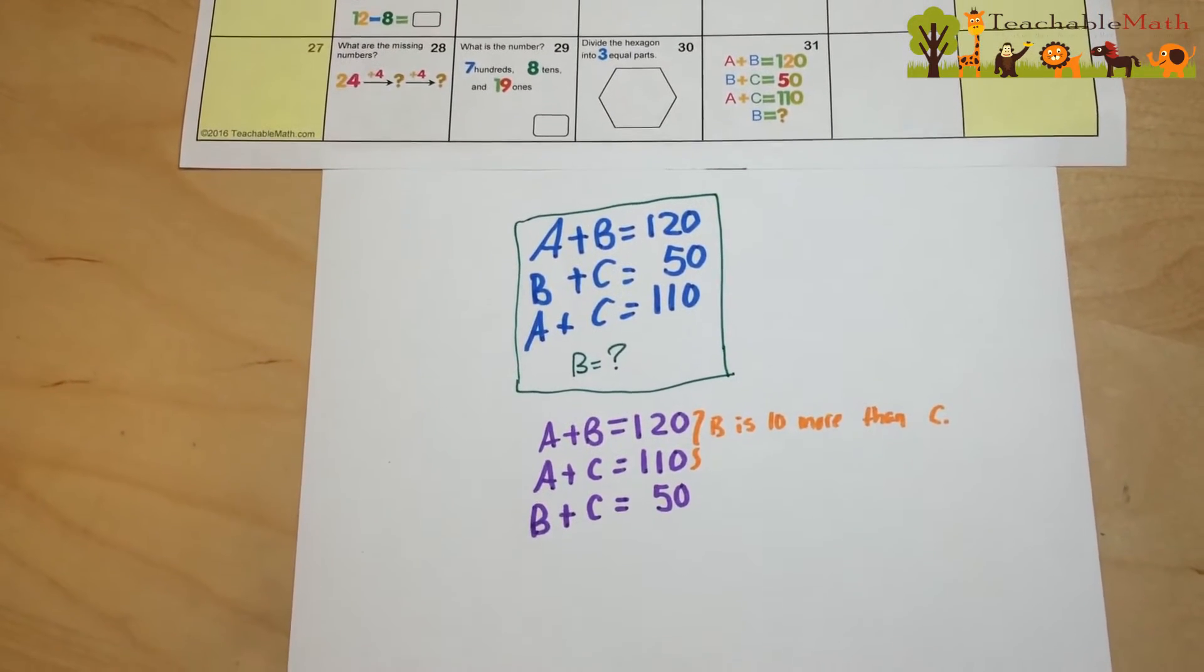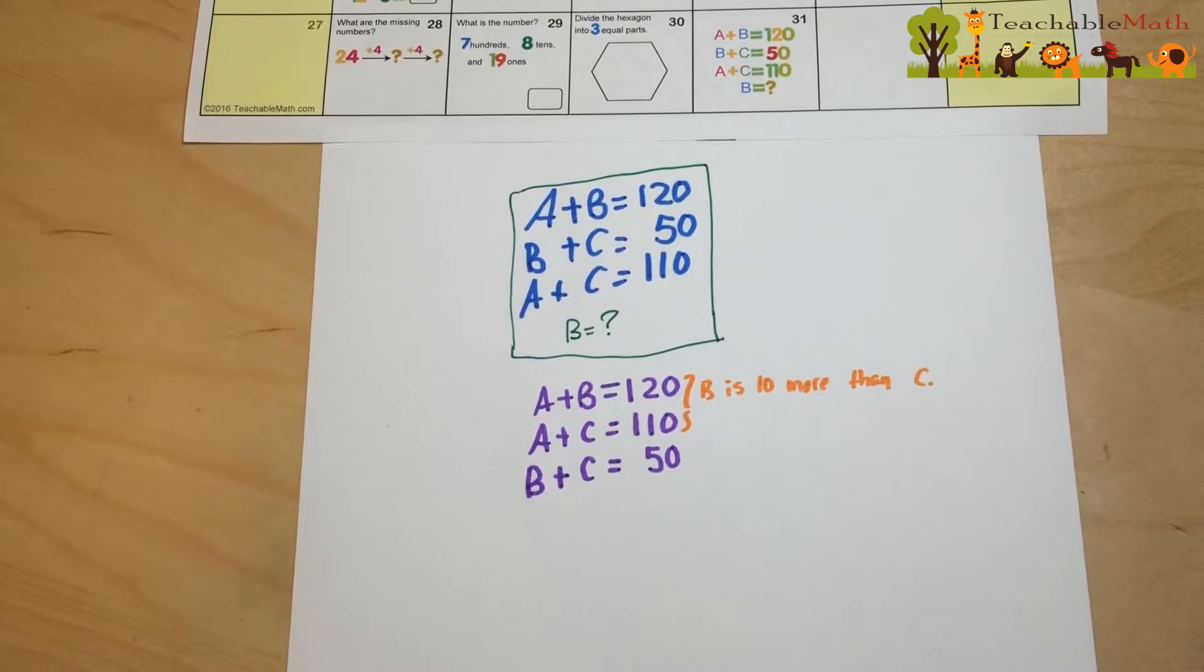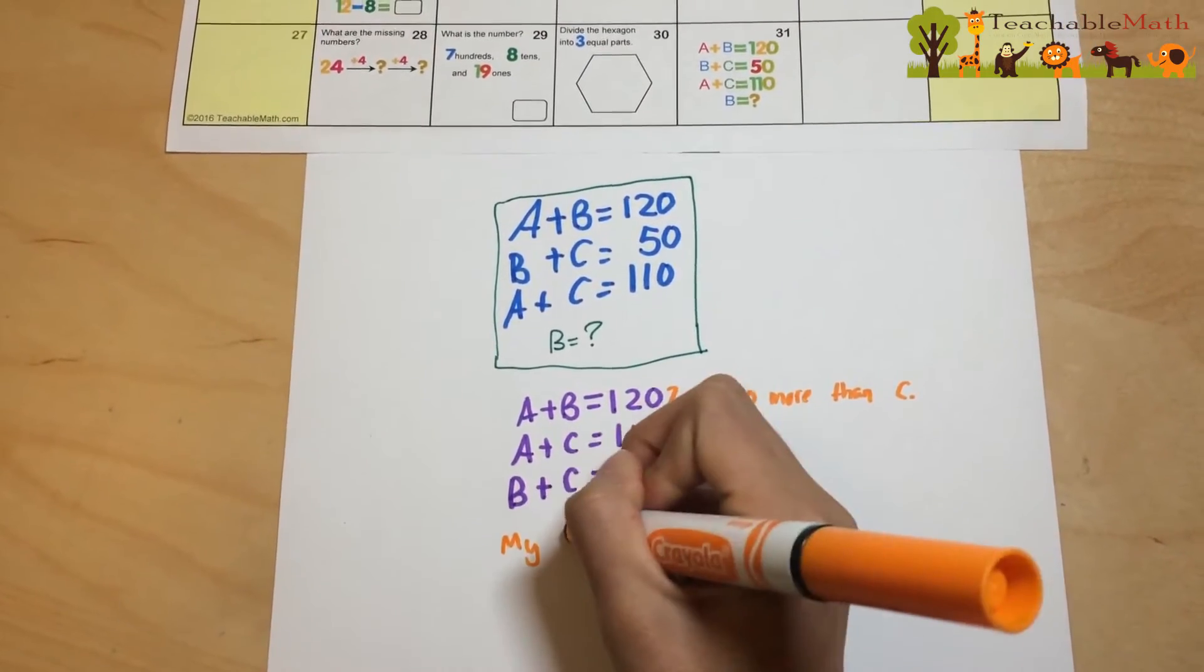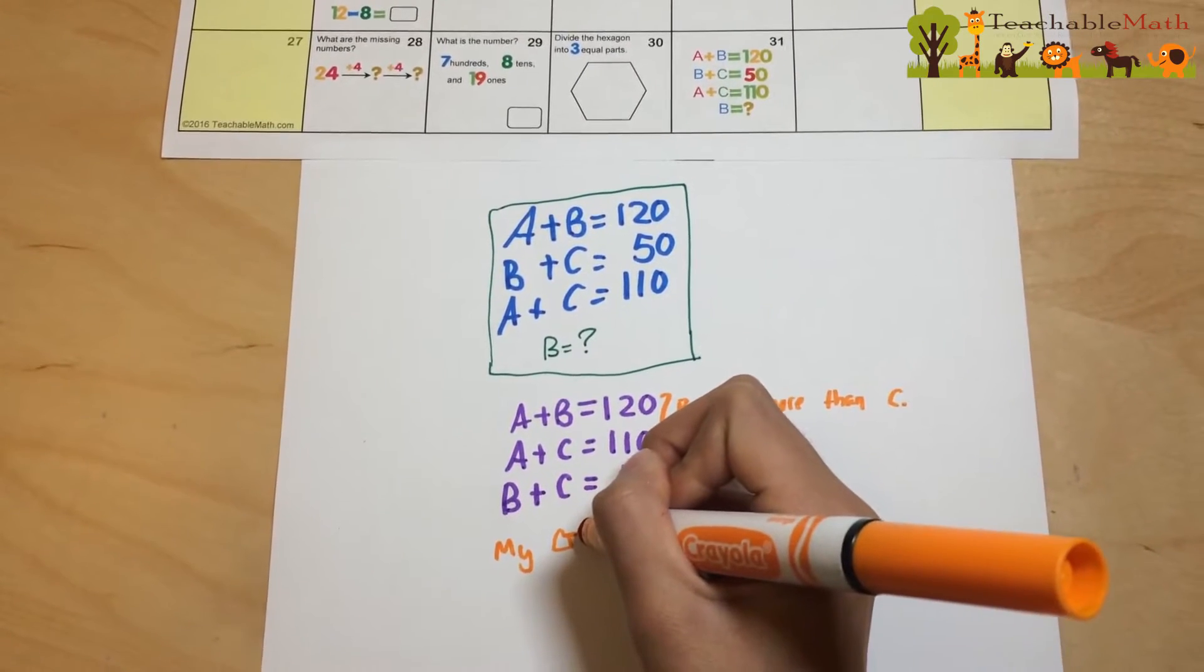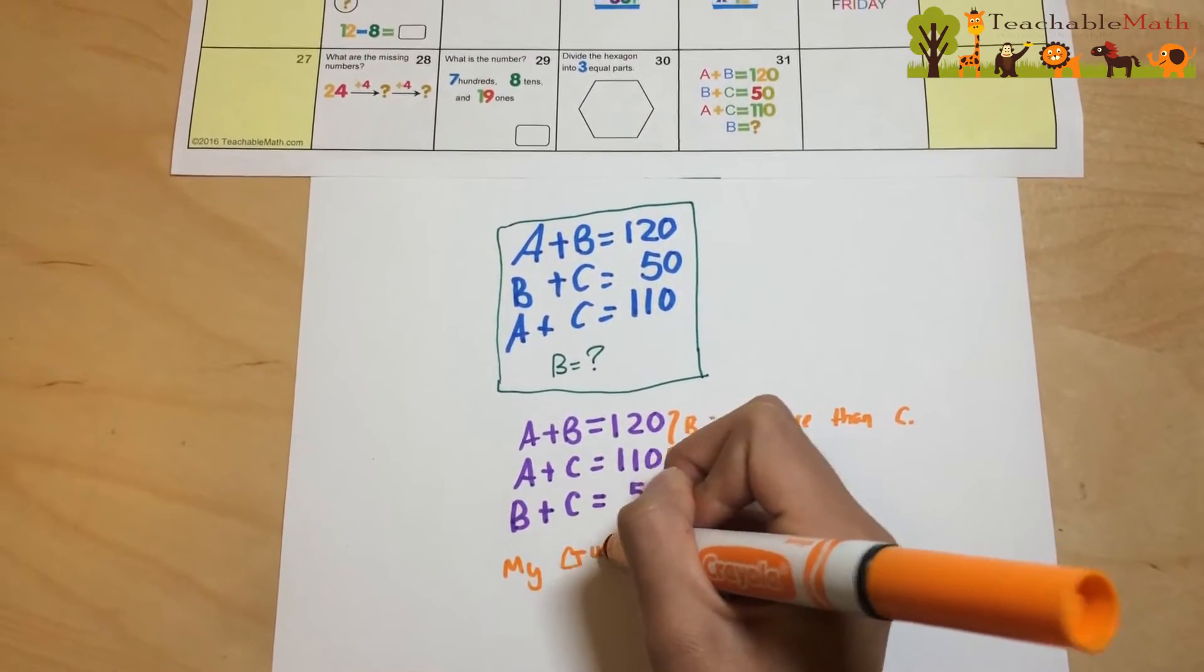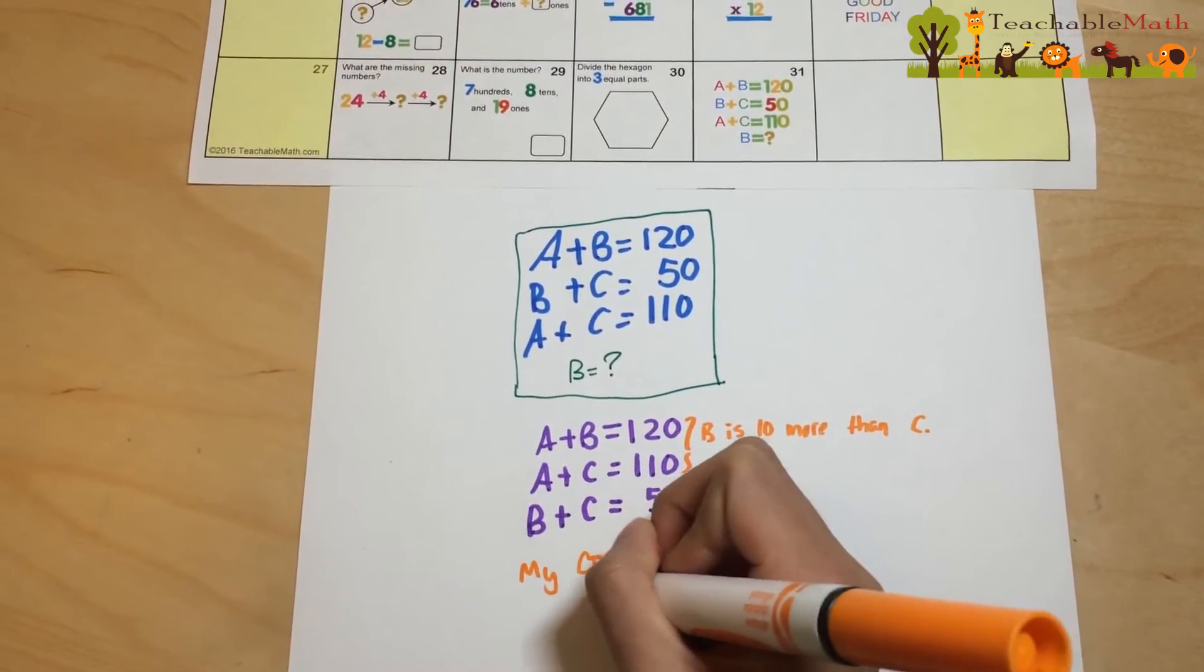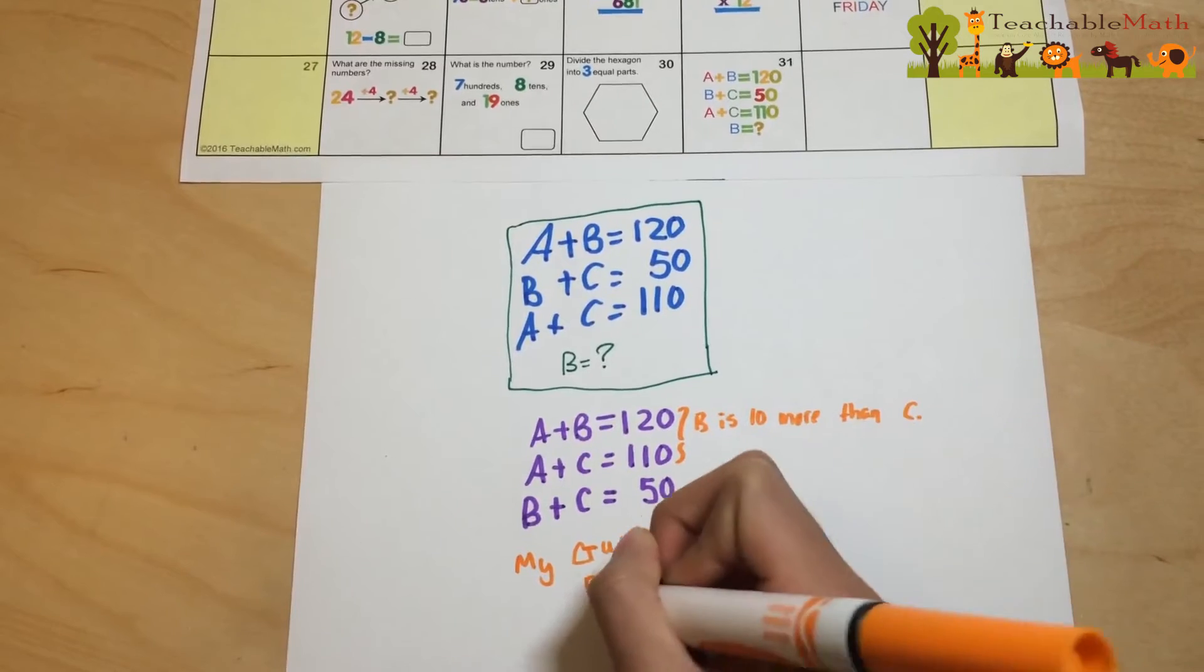So B plus C equals 50. And since B has to be 10 more than C, my guess is that B is 30 and C is 20.